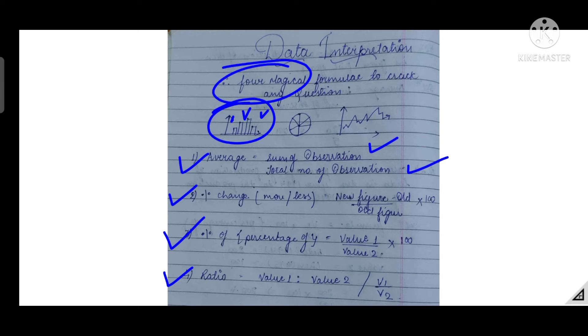The second formula is percentage changes. Many questions ask what is the change in percent from the previous year, or maybe two years ago. Is it more or less? That means the percentage increased or reduced. The formula is: new figure minus old figure upon old figure into 100. New figure is the latest one and old is given for comparison. We will minus these two.